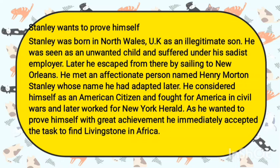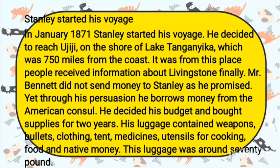As he wanted to prove himself with great achievement, he immediately accepted the task to find Livingstone in Africa. When Stanley started his voyage, he decided to reach Ujiji on the shores of Lake Tanganyika, which was 750 miles from the coast. It was from this place that people had last received information about Livingstone. Mr. Bennet did not send money to Stanley as promised, yet through his connections Stanley borrowed money from the American consul. He decided his budget and planned for two years. His luggage contained weapons, bullets, clothes, tent, medicine, utensils for cooking, food, and native money.